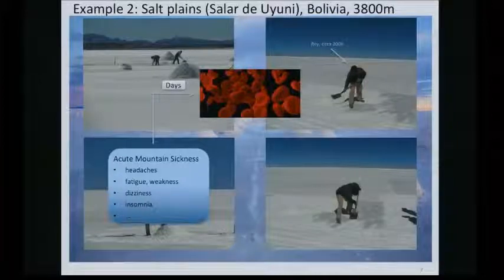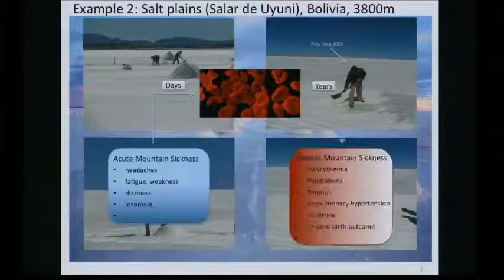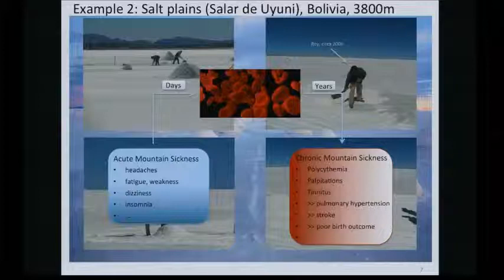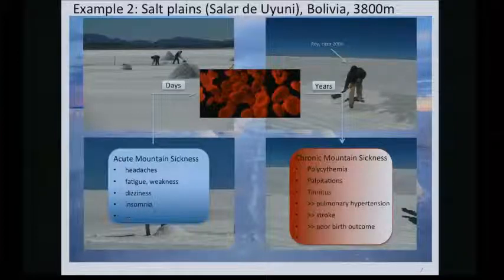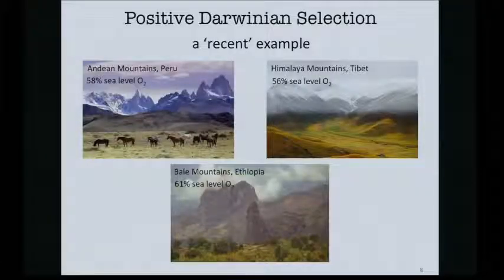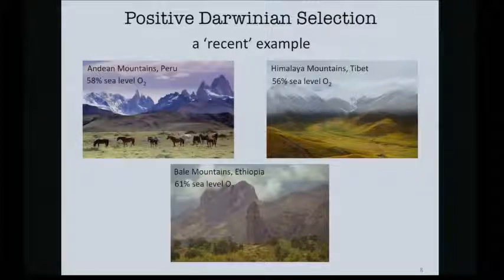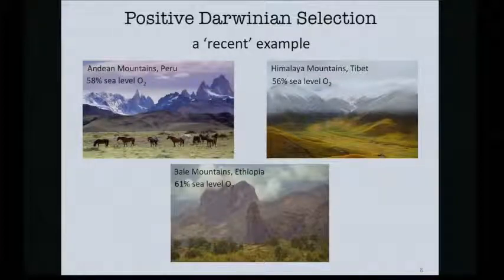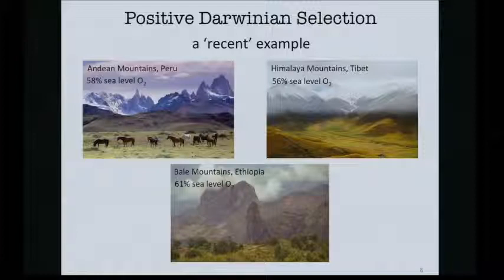This is a good short-term coping mechanism, but it's really bad if this is the way humans were to cope long-term. Because if you have this not for days but for years, your blood is more viscous and you have a whole bunch of problems associated with the cardiovascular system. Clearly, when you think about humans living at high altitudes, many of them actually don't present any sort of sickness — they're normal individuals, so they must be coping in different ways.